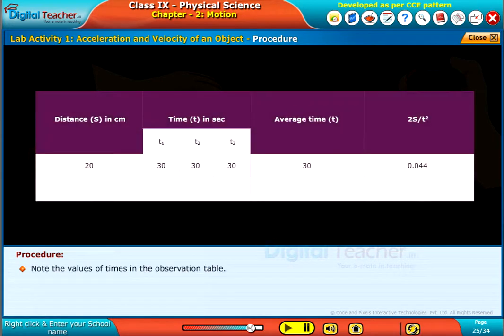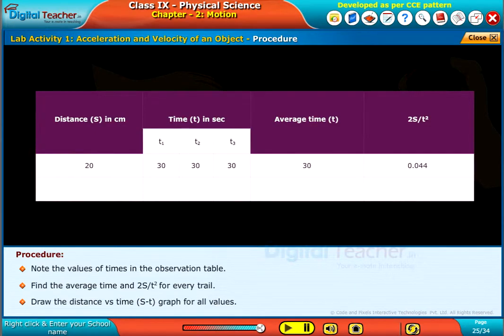Note the values of times in the observation table. Find the average time and 2s by t squared for every trial. Draw the distance versus time graph for all values.